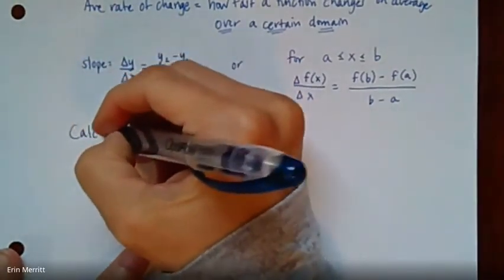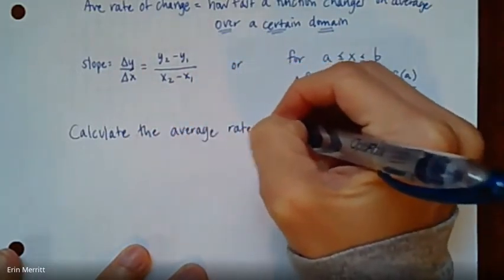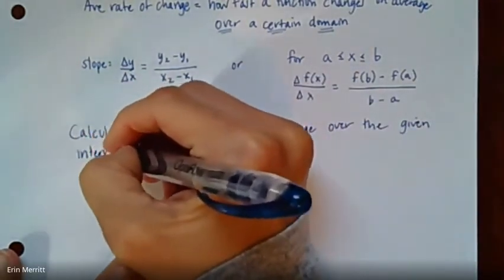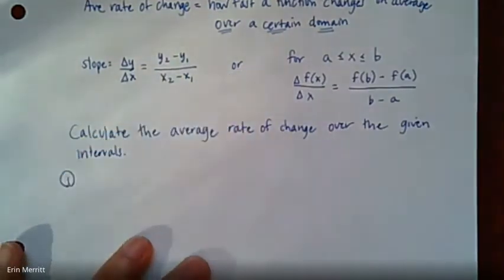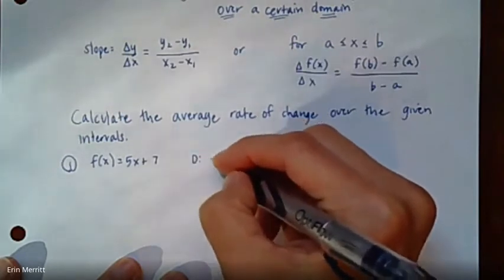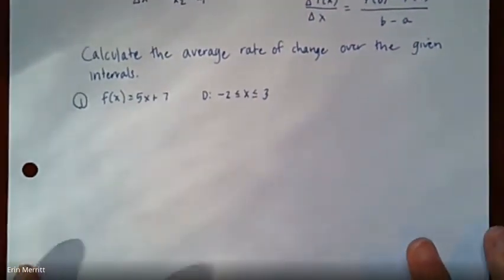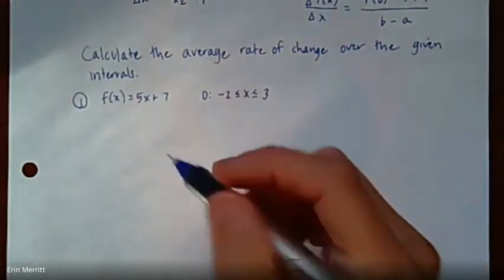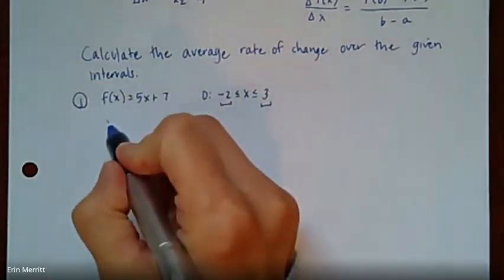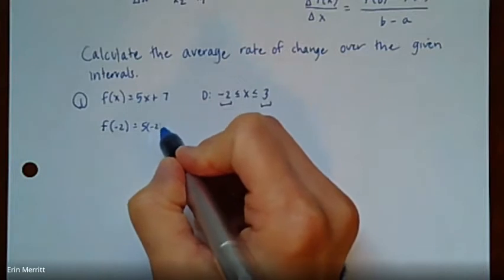These two things mean exactly the same, because anytime we use f of x or f of anything, those are y values. And then in this case, b and a, we're setting those as x values. So what I want to do is just some practice questions. So I'm going to say calculate the average rate of change over the given intervals. All right. So the first one, I'm going to give you the function f(x) equals 5x plus 7, and then the domain that I'm going to give you is from -2 ≤ x ≤ 3. Now if we were in class, I would give you a few minutes to try this one on your own, because we're flipping and watching a video.